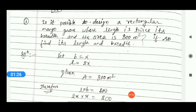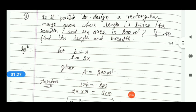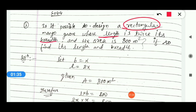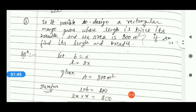Let's solve the question. The question is about a rectangle where the length is twice the breadth. So we start with breadth: let breadth = x, so length = 2x (twice of x), and area given is 800 square metres.